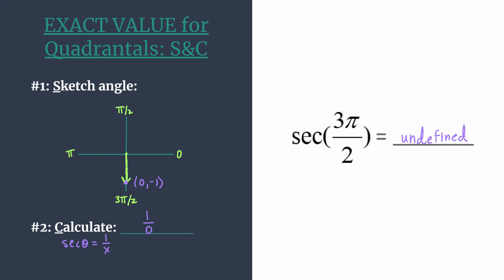3π/2. So that's the connection between having an exact value that's undefined and a vertical asymptote on a graph.